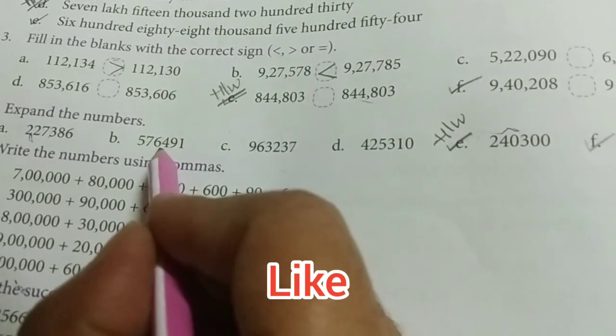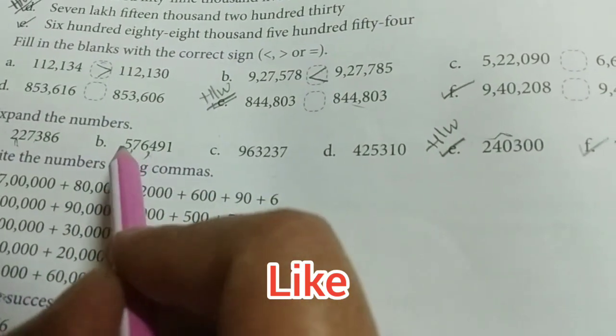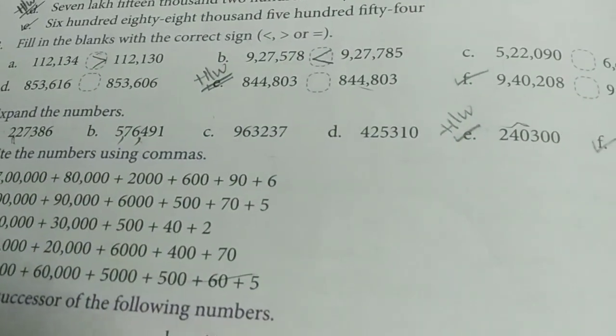First 3 digits, 1 comma. Next 2 digits, 1 comma. So, 5, 76,491. How can we write this one?